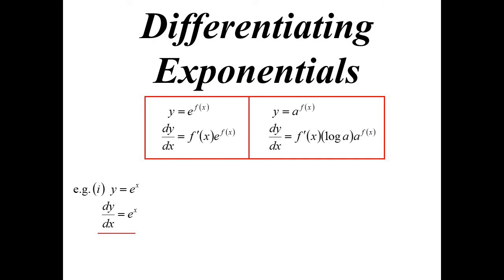e to the 5x, then, will become 5e to the 5x. Differentiate 5x. 4x plus 3 becomes 4e to the 4x plus 3. So this is rather quick. You don't have to have a linear function in the power.